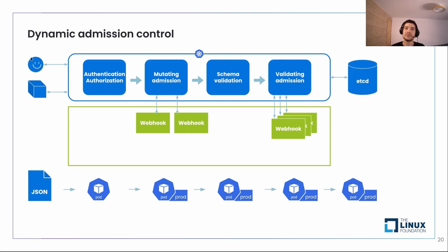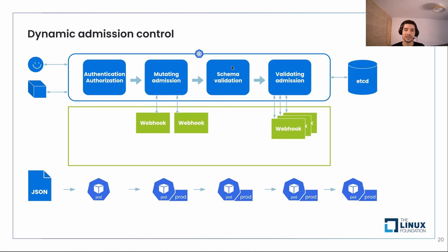Imagine we are the user and we want to create a pod. First, Kubernetes performs authentication and authorization to make sure you are authorized. If that's the case, it calls all the mutating webhooks one by one, passing the JSON object of the pod. The mutating admission webhooks perform validation — they either accept or reject it, and they may mutate the original JSON object. After mutation, a schema validation is performed, then all validating admission webhooks are called in parallel. If one fails, an error is returned to the user. If all validations succeed, the pod is stored in etcd and will eventually be created.